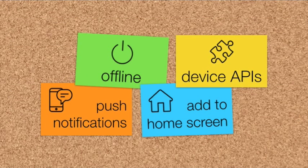The bits that need to fall in place are these four pillars: offline, device APIs, push notifications, and add to home screen. There are probably a couple more, but these are the ones I'll be talking about today. We'll go through them one by one.